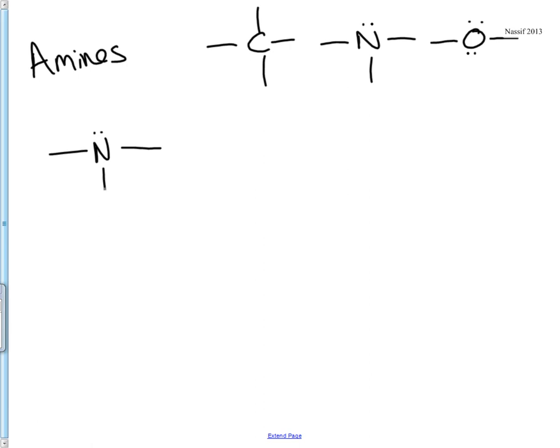Nitrogens have three groups. It can be hydrogens or anything other than hydrogens, represented by R. So amines can have primary, secondary, or tertiary structures. Primary, meaning there's only one R group and two hydrogens. Secondary, meaning there are two R groups and a hydrogen. And tertiary, meaning there are three R groups.